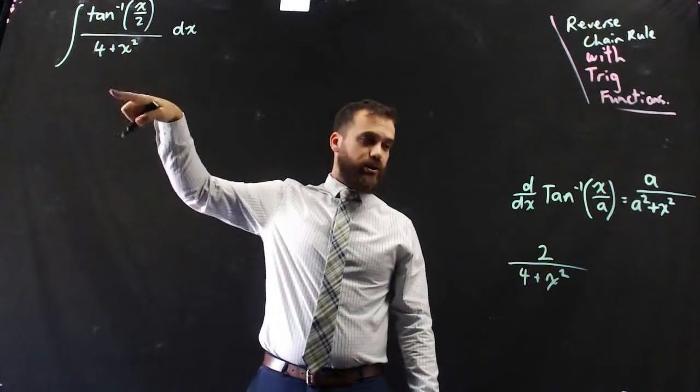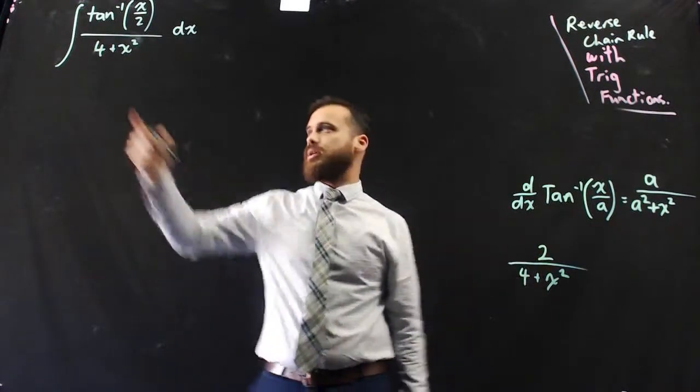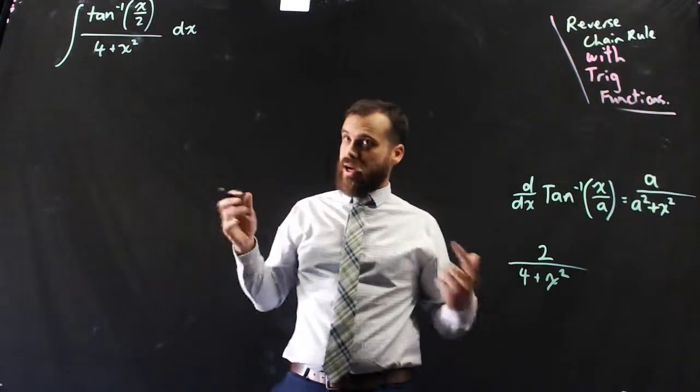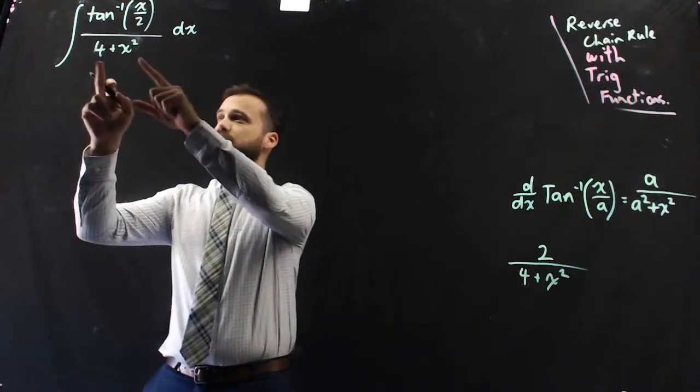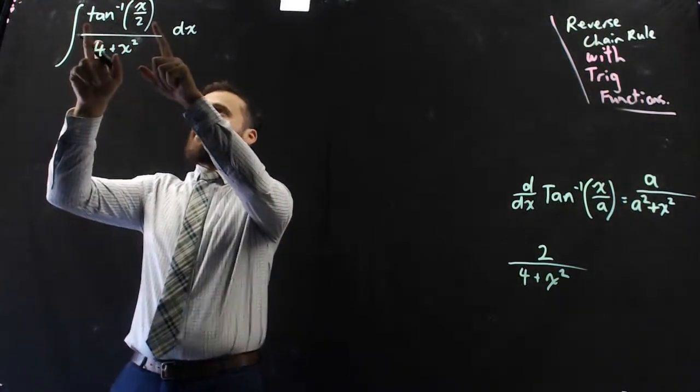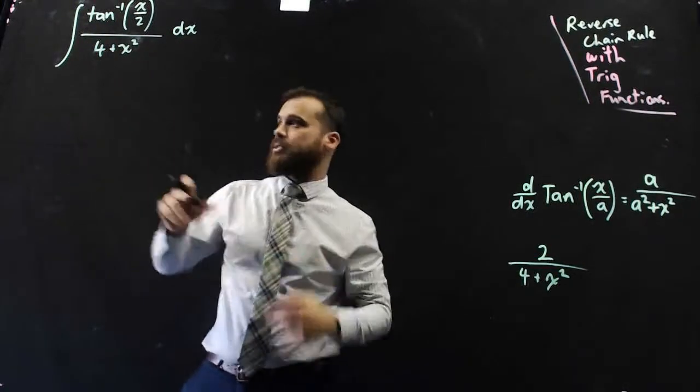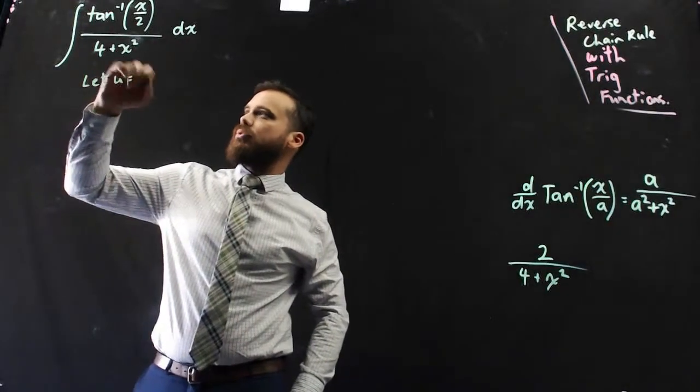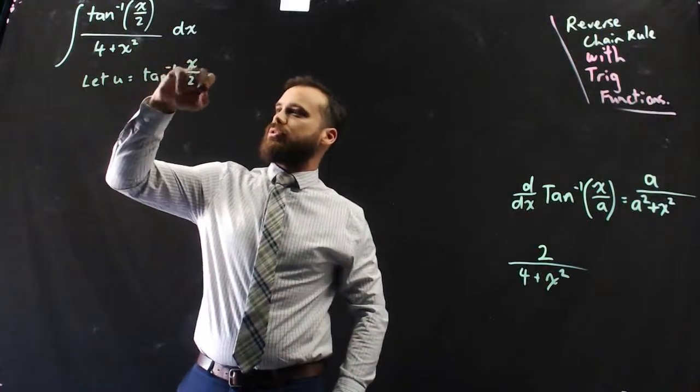You can see we're pretty close to the mark. This isn't 2 on 4 plus x squared, it's 1 on 4 plus x squared, but it's half of it, so it's good enough. So if this is the derivative of this, then we can let all of this equal u, and see what happens next. So let u equal all of that, tan to the negative 1, x on 2.